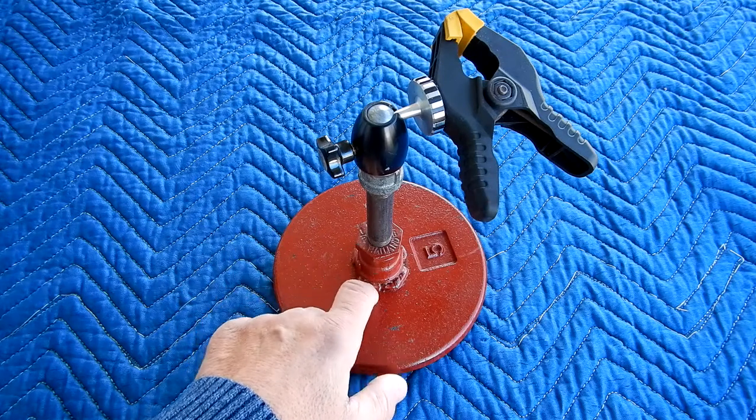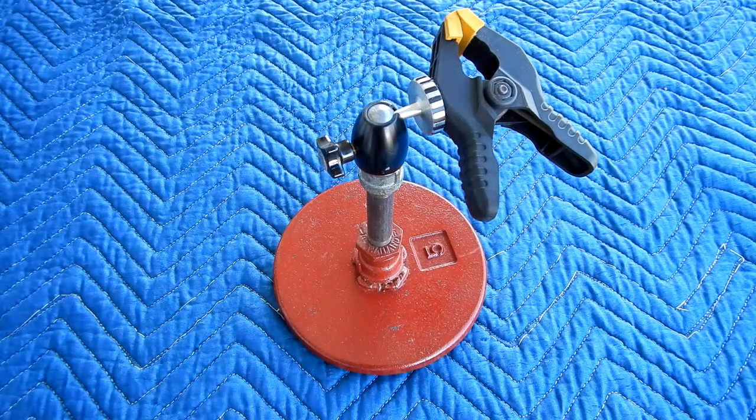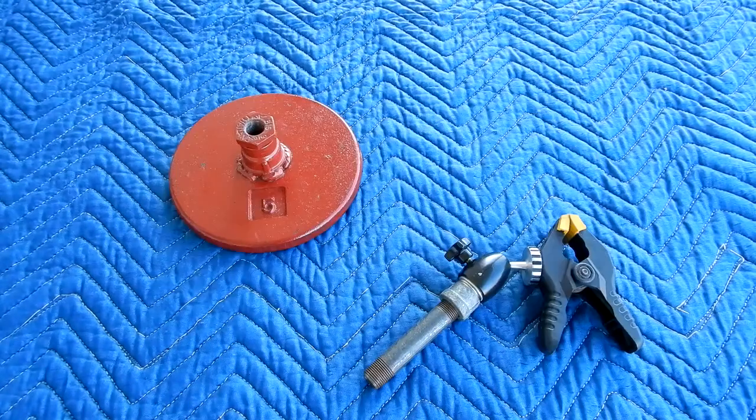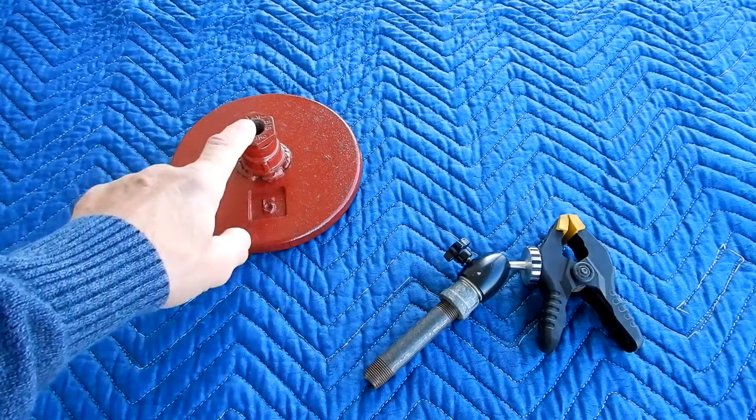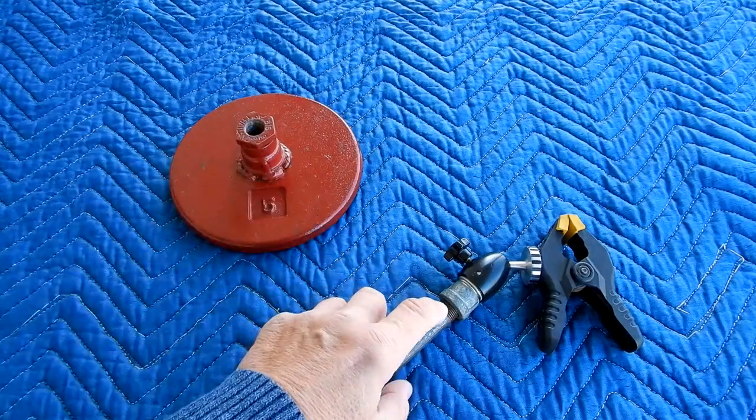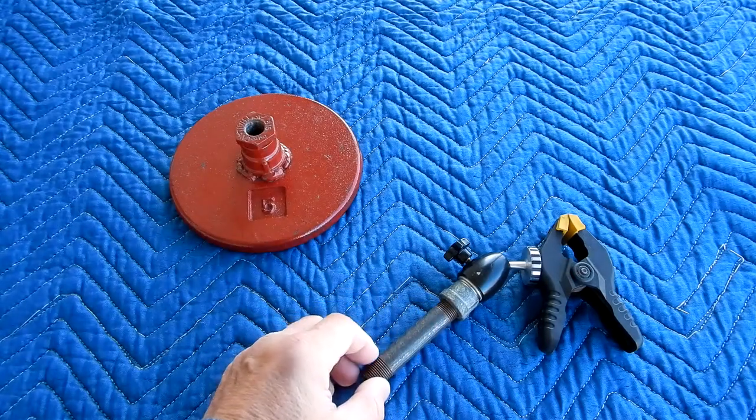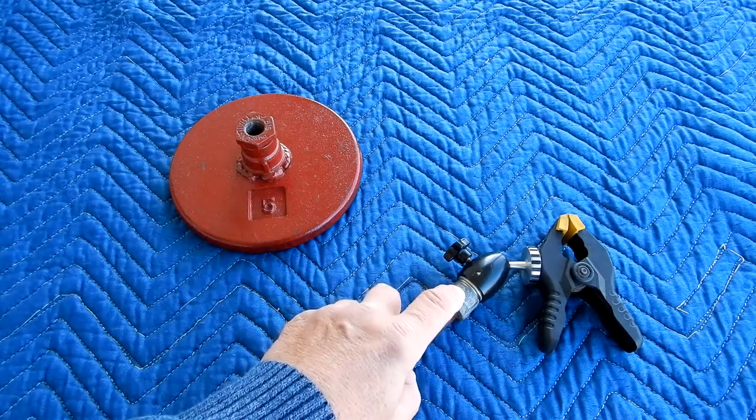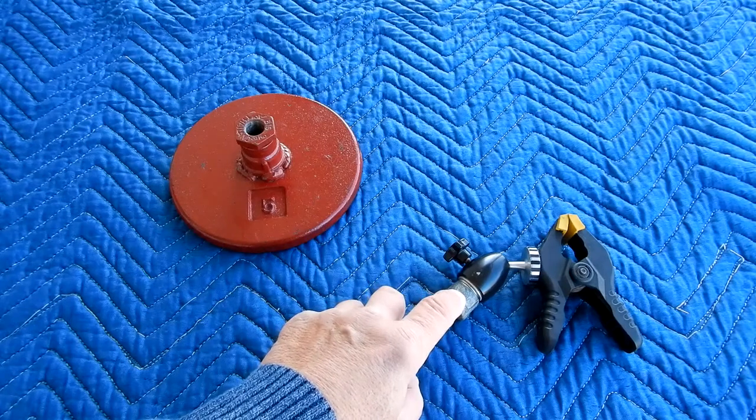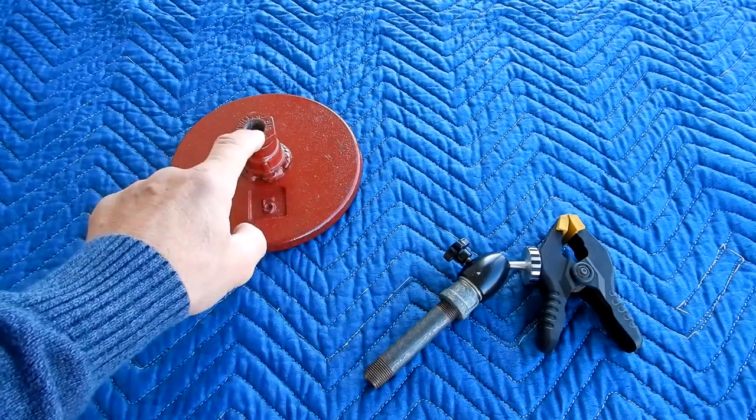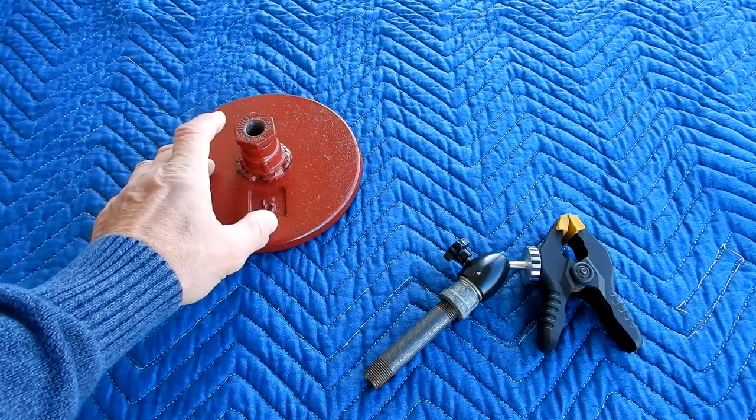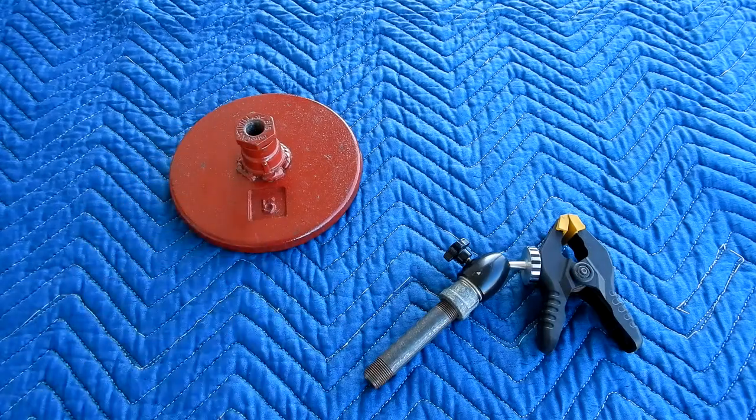The other feature this has is that I just hand-tighten into this. I have the pipe nipple turned onto the pipe cap tight so that this doesn't become loose, but this is just hand-tightening here. So now when you want to put this in your toolbox, everything breaks down.